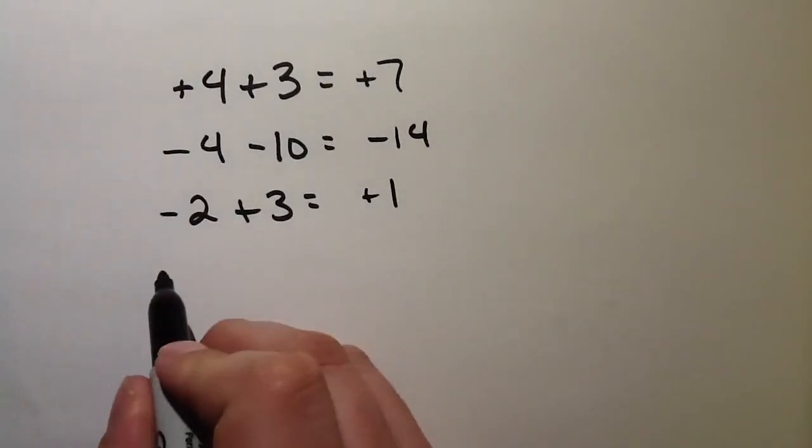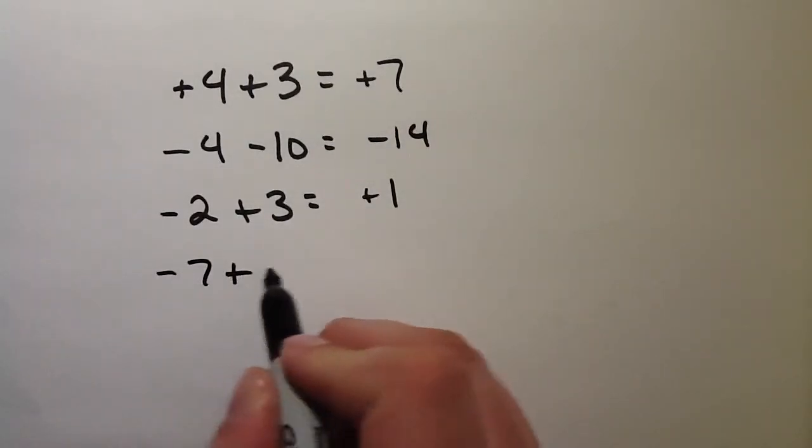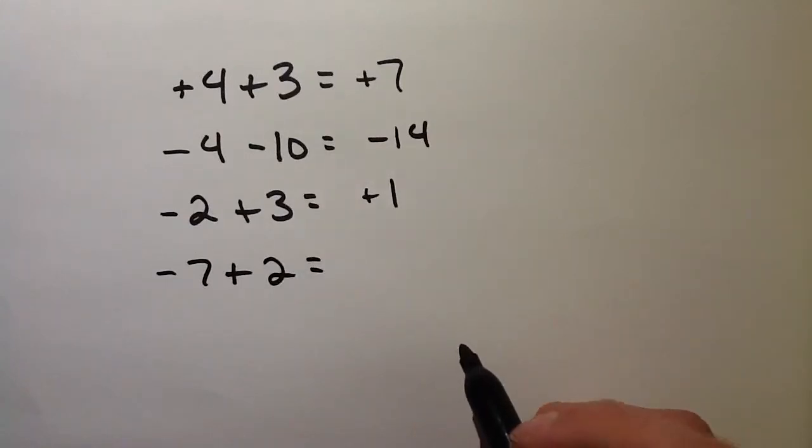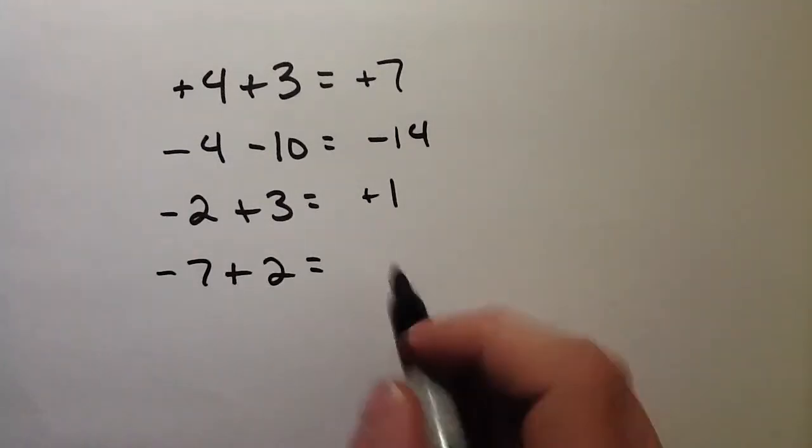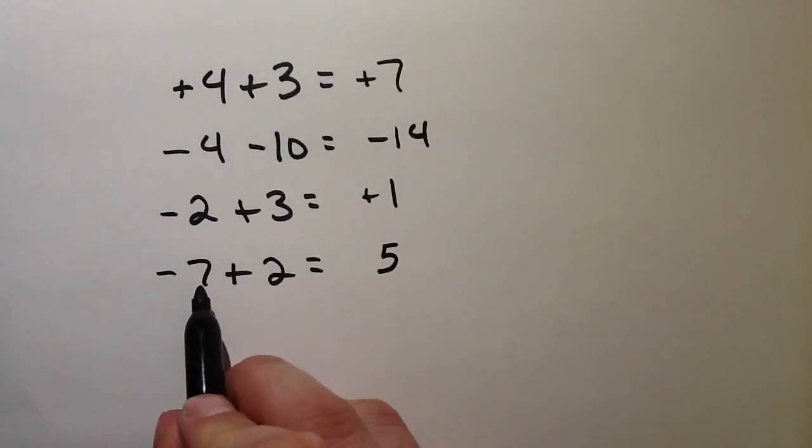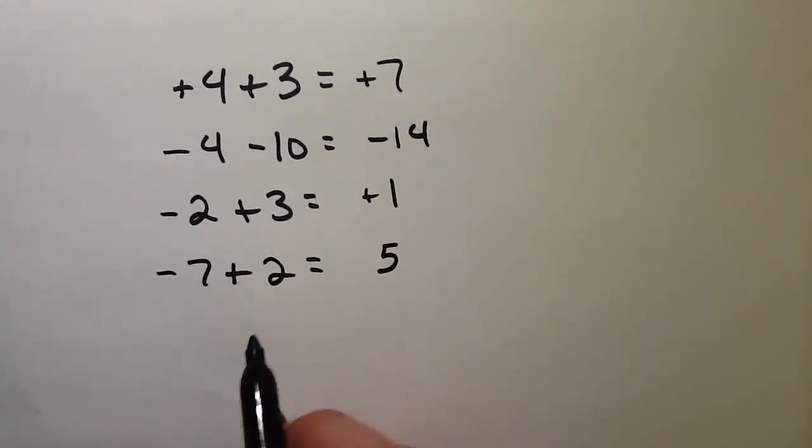So we go over another example. Minus 7 plus 2 equals. The numbers have different signs, so I subtract the two numbers. 7 minus 2 is 5. This time the 7 has the bigger sign, so the 5 gets that sign, negative 5.